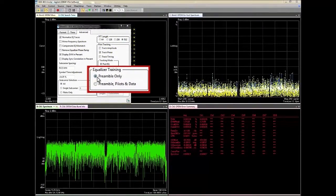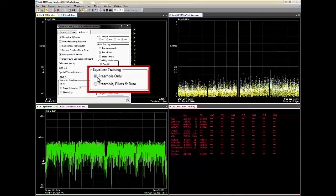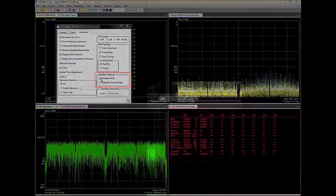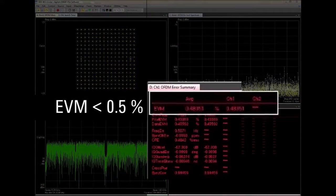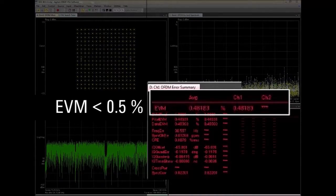When we use the preamble only setting for the equalizer training in the VSA software, the OFDM error vector summary shows an impressive EVM of approximately 0.45 percent.